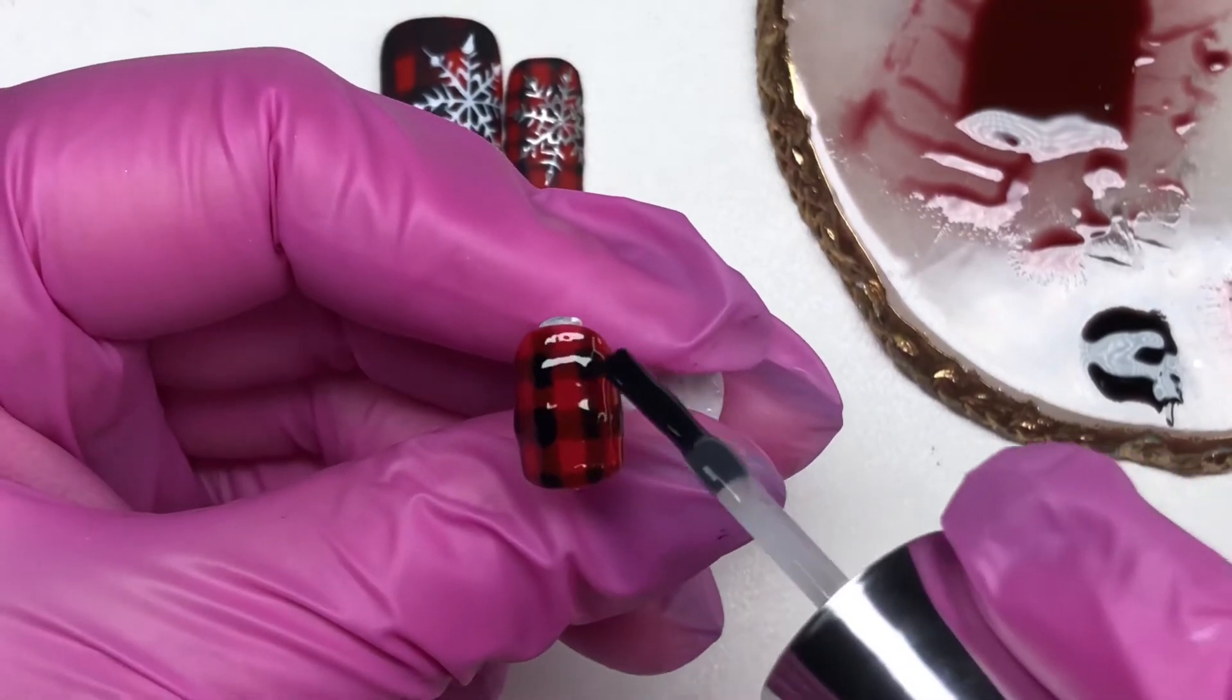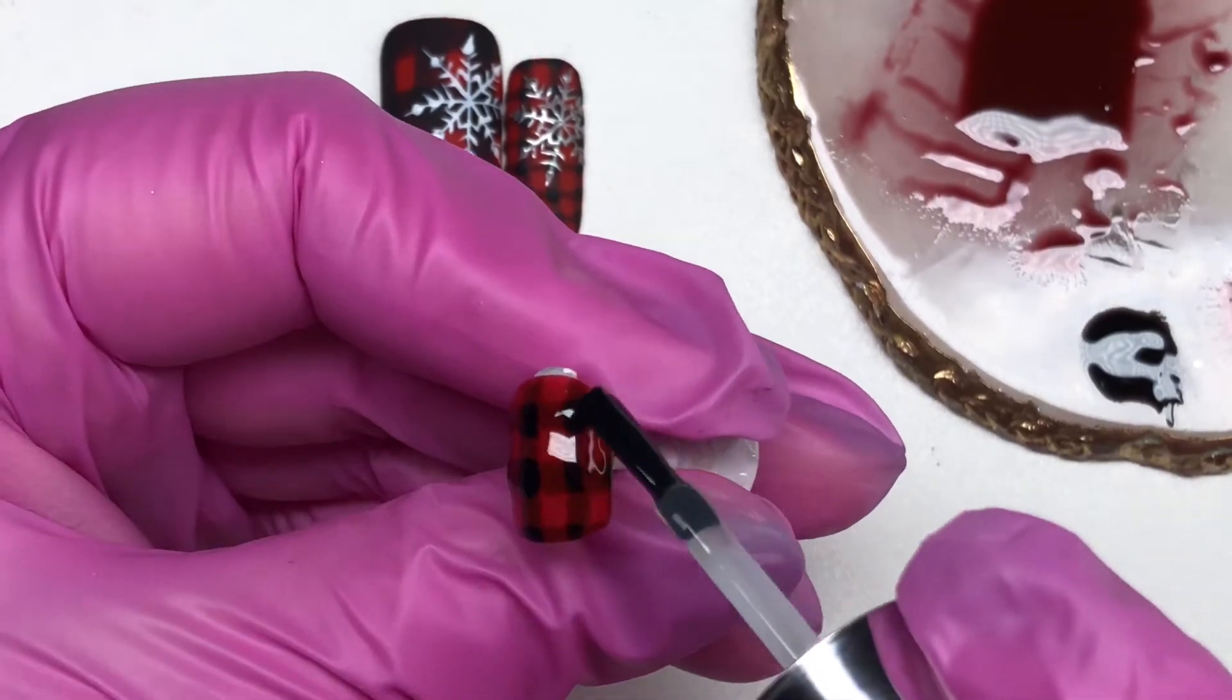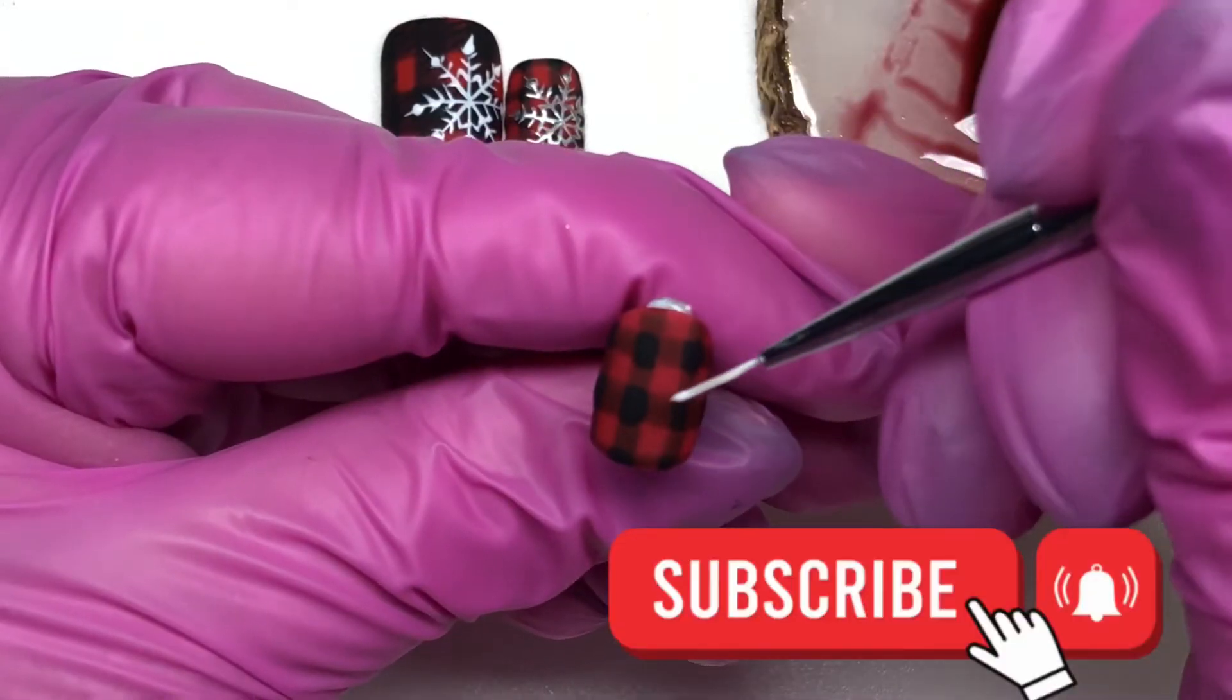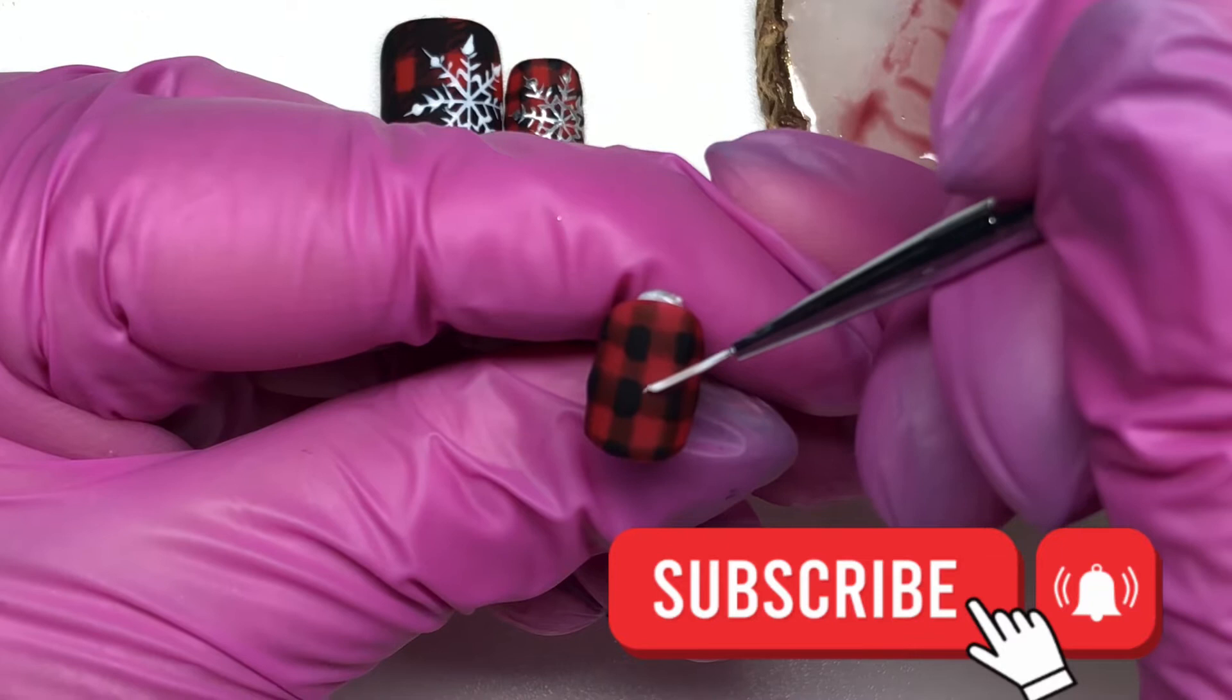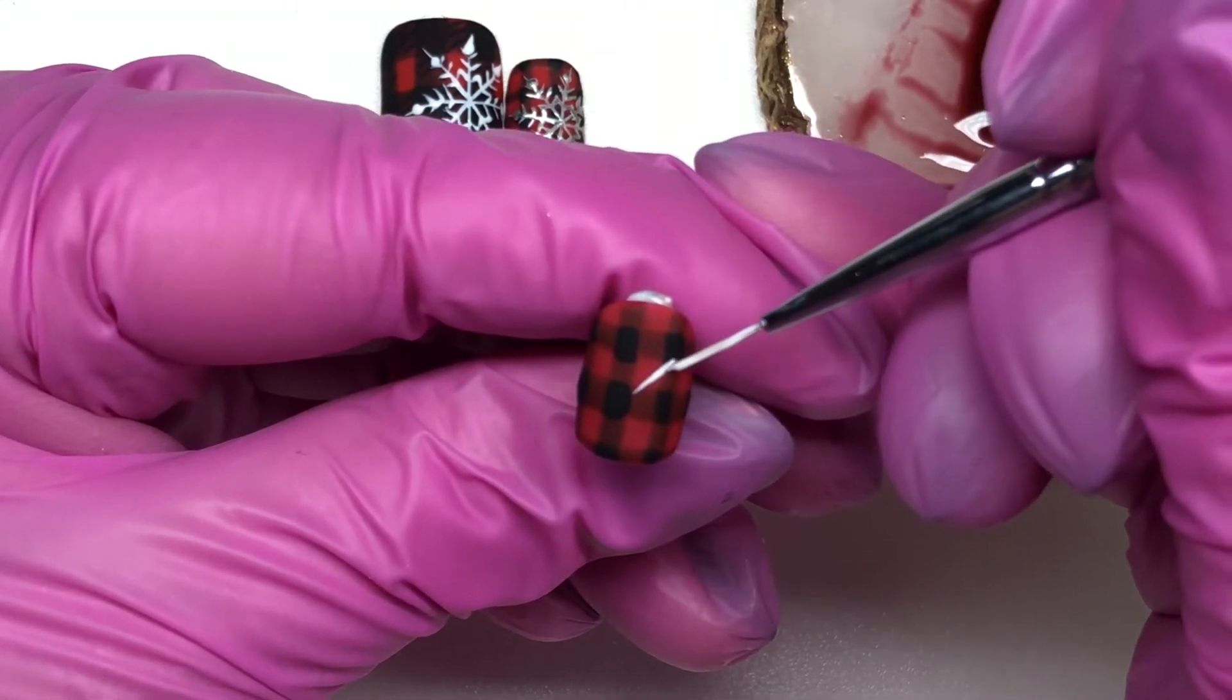Now I'm just topping this with matte top coat, a real nice thin layer. If you don't like the bumpiness, maybe you could even top it with a very thin layer of builder gel and then go in with your matte top coat just to even out the nail a little.